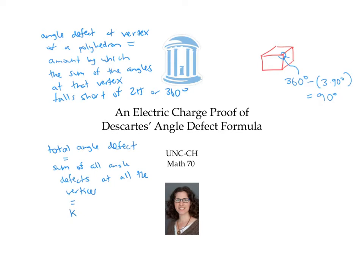We noticed that the total angle defect was equal to two pi times the Euler characteristic of the surface, or in degrees, 360 times the Euler characteristic. This formula is known as Descartes' angle defect formula, and the equivalent version for smooth surfaces is called the Gauss-Bonnet theorem. This video gives a proof of this relationship.